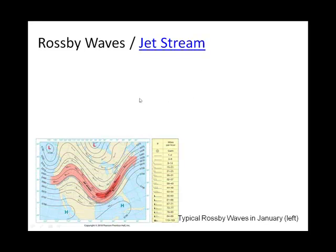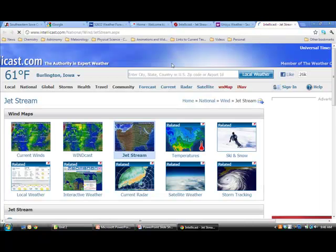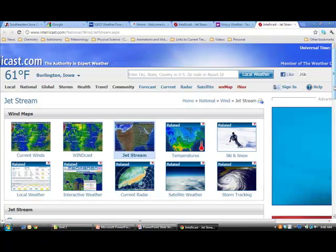What you're looking at here is probably one complete Rossby wave from crest to crest. There would be three to six of those encircling the world. Notice that nestled in the Rossby wave is the jet stream. I'm going to go ahead and show you the IntelliCast jet stream — that's what I wanted to do earlier.